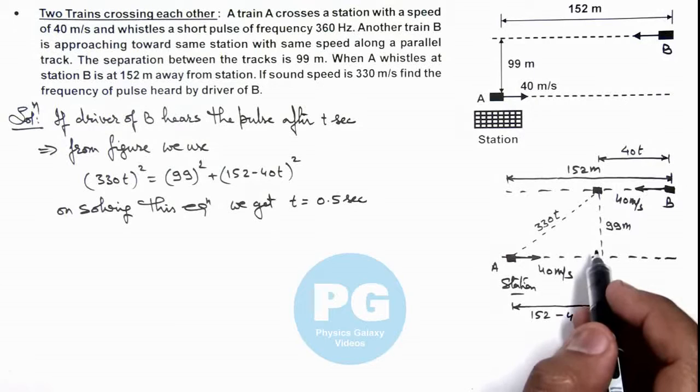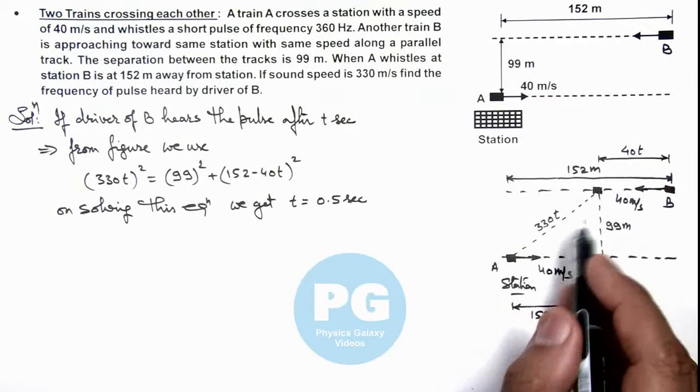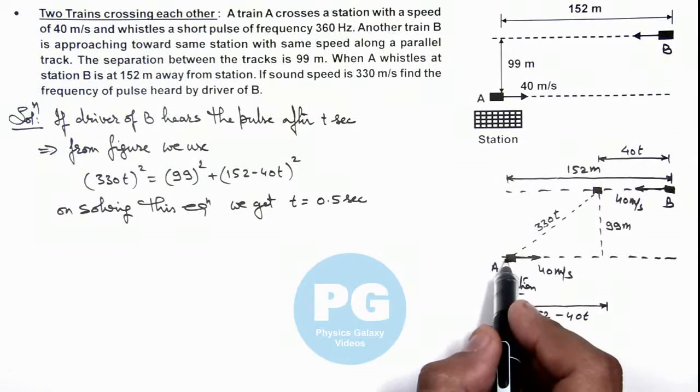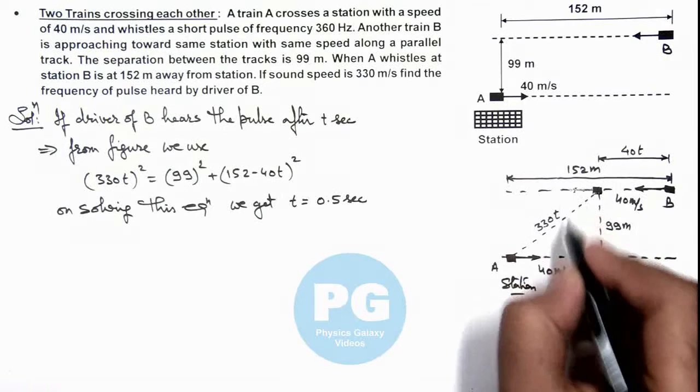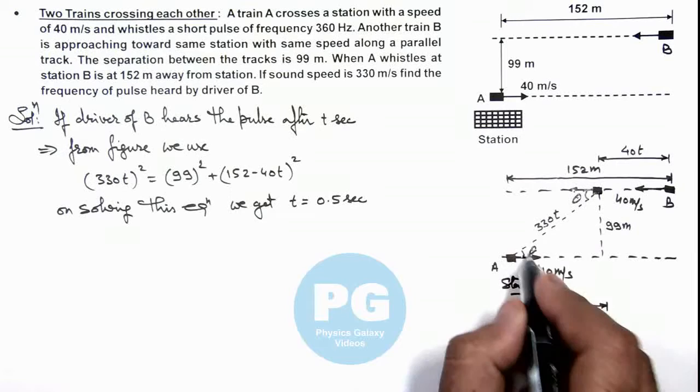Because we already studied in concept videos that we apply Doppler's effect at two positions: one is the position from where the source emits the pulse, which is this position, and the other is the one where the observer receives the pulse. Here both are moving at the same velocity, and if this angle is theta.